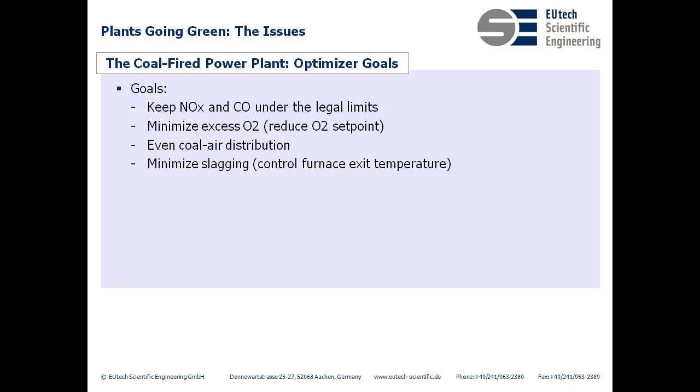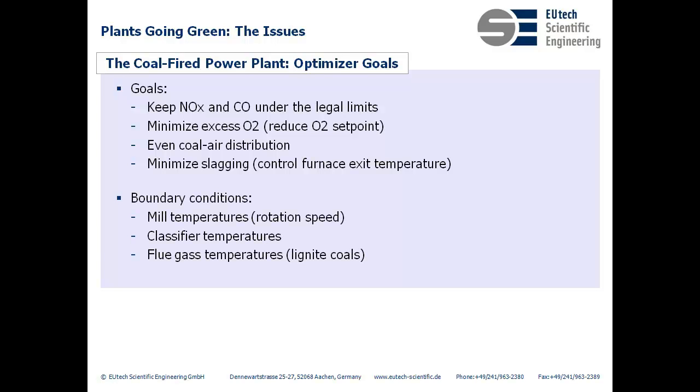Finally, high temperatures inside the boiler do mean more thorough combustion, but they can also lead to slagging. That's when ashes become soft and stick to the walls. So the optimizer needs to control the furnace exit temperature so it is high enough for thorough combustion but not too high that it leads to slagging.